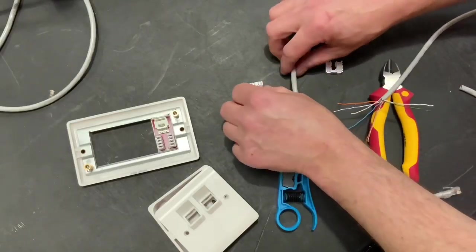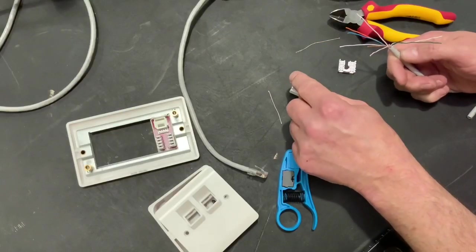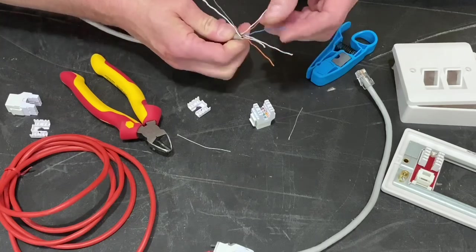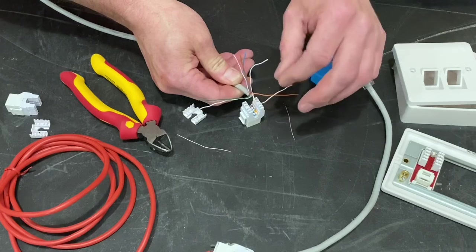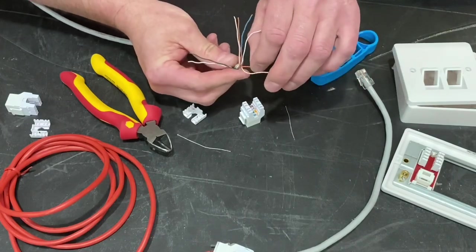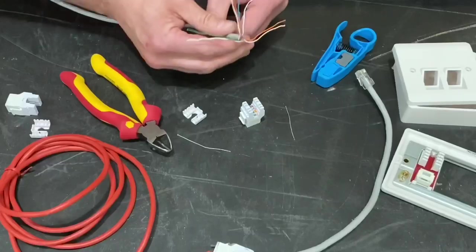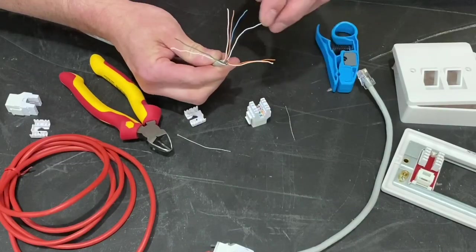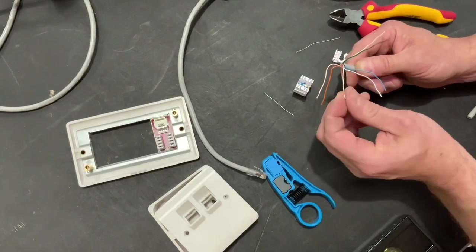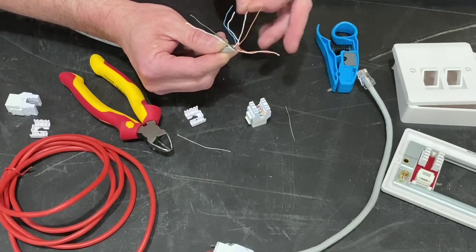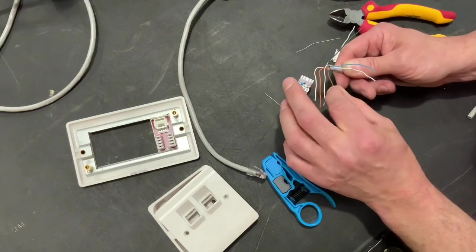It's going to take a few moments to lay these out into the right position. We're using the B method of connection, so I've got white and orange followed by orange. I can lay my first two out. Then my next two down are white and brown and brown. So I'll take my white and brown, lay that under the orange one, followed by my brown.